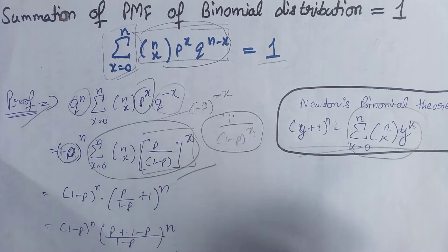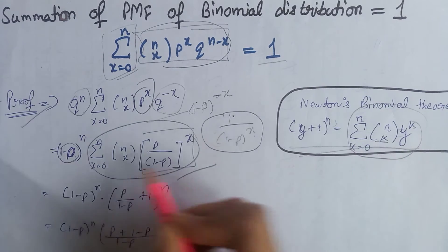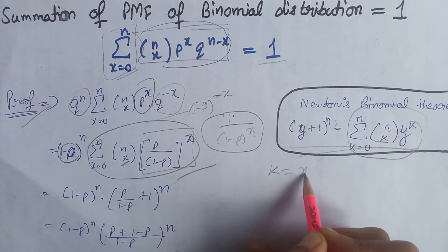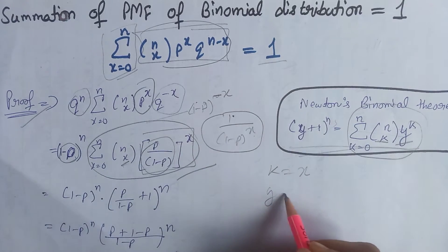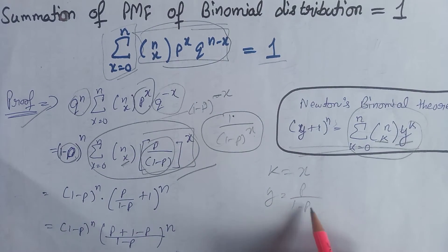we can see clearly that at the place of k here we have x. That is k equals x. At the place of y, here we have this whole term that is y equals p divided by 1 minus p.